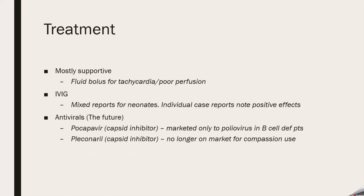How do we treat a parechovirus patient? So the patient comes in, we do the RT-PCR, we have MRI confirmed — but treatment doesn't really change. It's still mostly supportive: fluids for tachycardia or poor perfusion. We can give IVIG. There are mixed reports on this, and there's very little data out there. Individual case reports do note positive effects, and intracellular and extracellular RNA levels for parechovirus do decrease with IVIG administration.